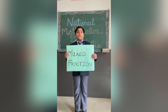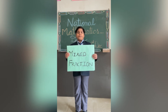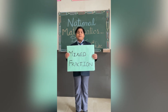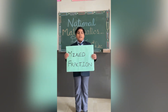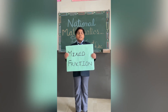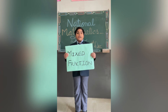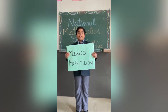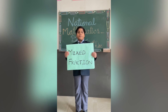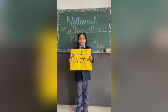A fraction that has a combination of a whole number and a proper fraction is called a mixed fraction. For example, 7 and 1 upon 3, 3 and 2 upon 3, 9 and 7 upon 3, etc. are called mixed fractions.